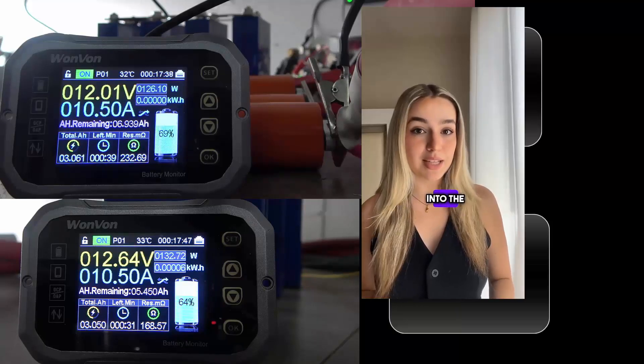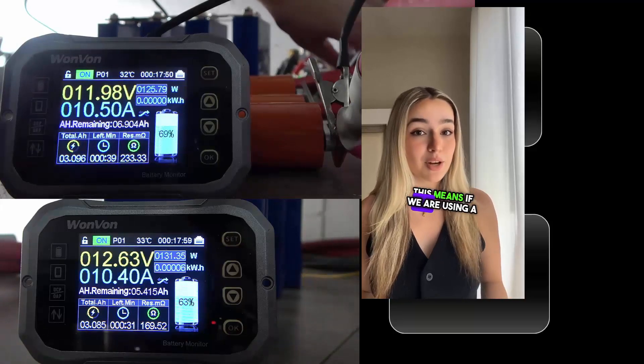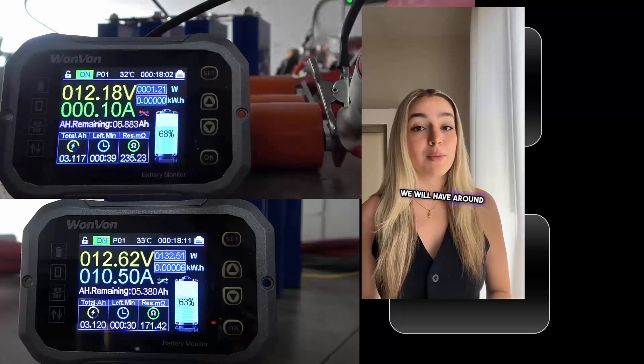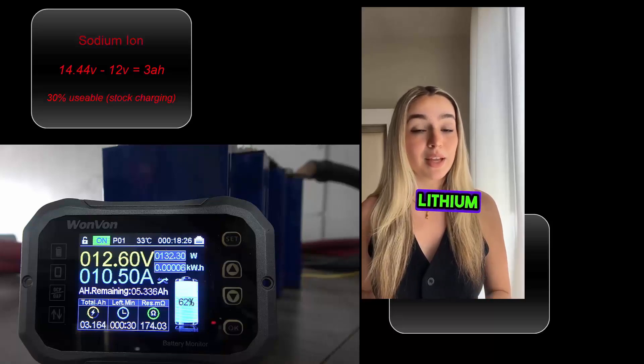At 3.07 amp hours into the test, we have dropped to 12 volts on the sodium ion battery. This means if we are using a stock alternator with a sodium ion battery, we will have around 30% of the cell's rated capacity in usable energy. Let's see where we end up with the lithium battery.